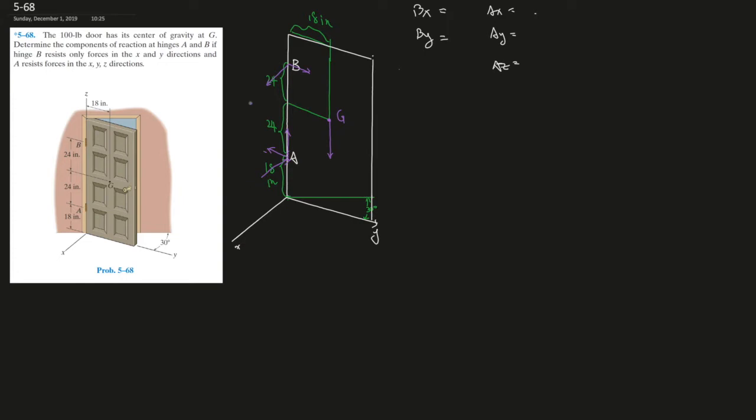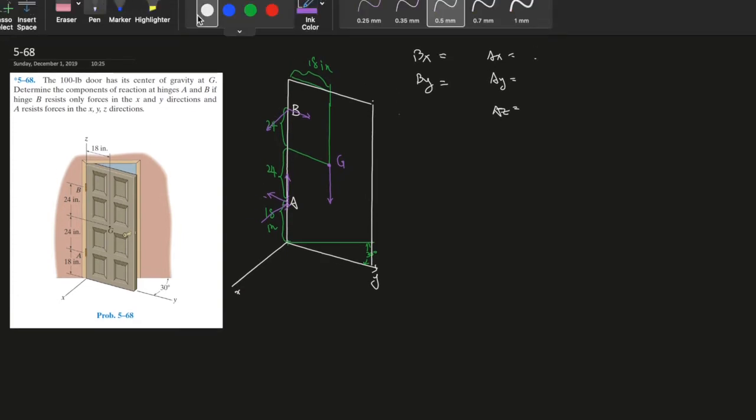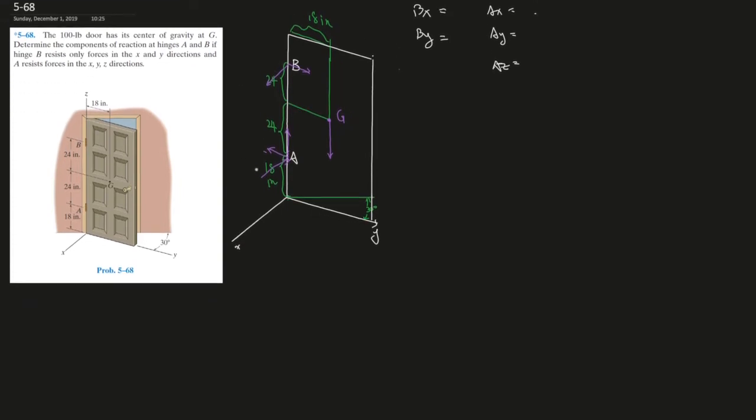But instead what we can do is draw the x-axis for ourselves that's parallel to the original x-axis. We call it x prime, and here's the y prime right over here.